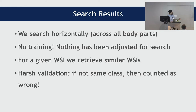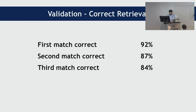This is a pretty harsh validation because results could still have histological meaning even if they don't match exactly — our study simply denies that and counts it as wrong. What we found in the 2,300 dataset is that our first match itself is 92% accurate. So if we search for a primary site, we get 92% accuracy that we'll fetch the same primary site as the first result. Similarly, we have second and third match results as well.